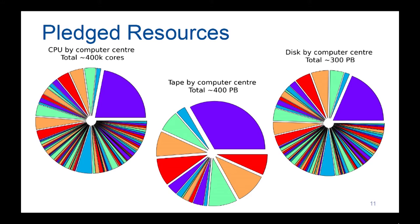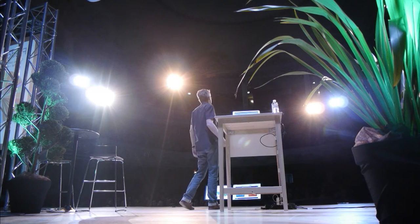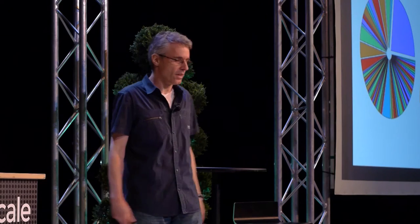Where do we get the resources from? Here are diagrams of resources pledged to us: CPU, tape — because we have a serious data preservation and archiving activity — and disk, broken down by computer center. Although high-energy physics is a global community, high-energy physics funding is not. Any particular country is not willing to build an extension to the CERN computer center, but they are willing to build an extension to one of their own computer centers. So we deal with integrating around 150 computer centers' worth of CPU and disk into a single resource and present that as the platform for LHC computing.